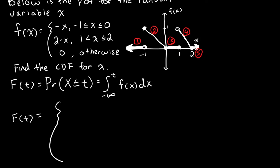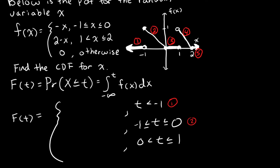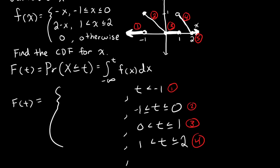Let me write that out now, and then I'll find each piece in a minute. The first piece will be for when t is less than negative 1. Next, we'll have a piece for when t is between negative 1 and 0. Next, we'll have a piece for when t is between 0 and 1. Then we'll have a piece for when t is between 1 and 2. And lastly, when t is more than 2.